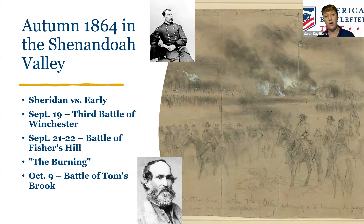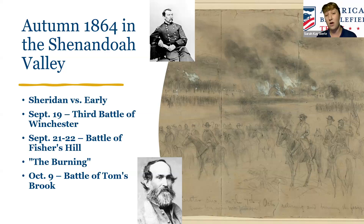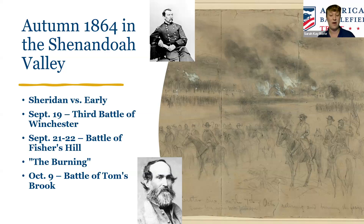On September 19th, the Third Battle of Winchester — a Union victory. September 21st and 22nd, the Battle of Fishers Hill — another Union victory. Fishers Hill opens up the Shenandoah Valley region, and there's a period referred to as 'the burning,' the systematic destruction of crops and supplies in the area — burning of fields and barns, not civilian houses — a lot of destruction. On October 19th, Confederate cavalry is defeated at the Battle of Tom's Brook, completing a string of Union victories in this region.